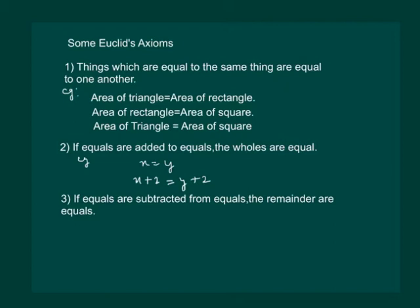Another Axiom says that if equals are subtracted from equals, the remainders are equal. For example, if x is equal to y, and we subtract 3 from both sides, then x minus 3 will be equal to y minus 3.